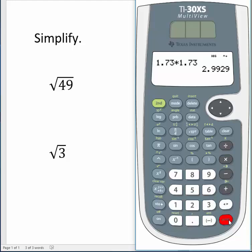We should get the number 3. But notice we get 2.9929, which is very close to 3.